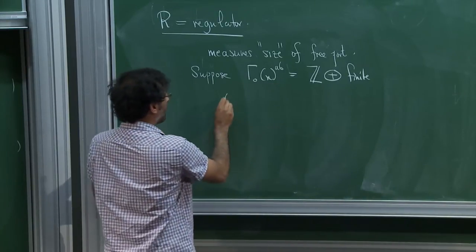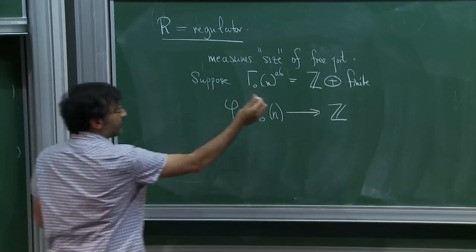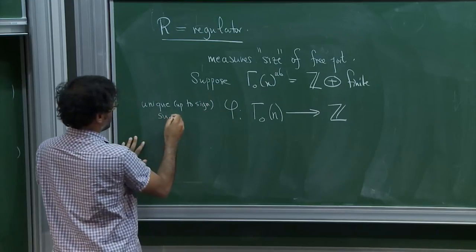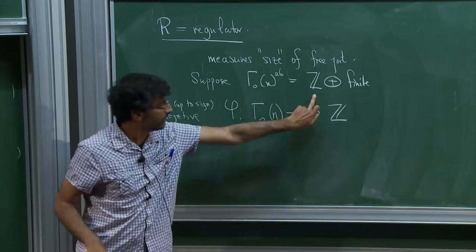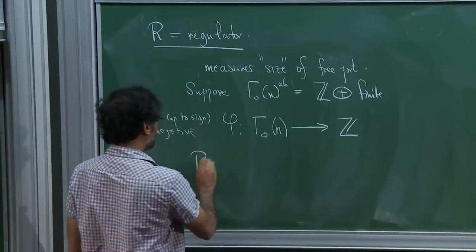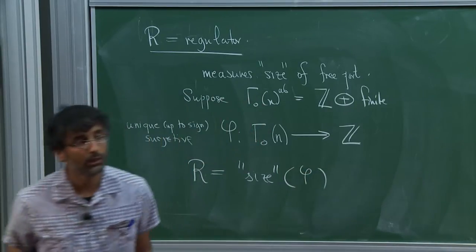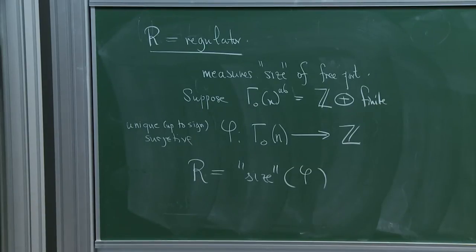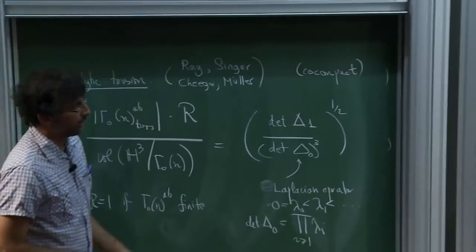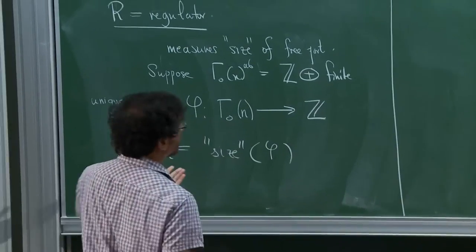Suppose that γ₀(n)^ab is a copy of the integers plus a finite group. There's a unique — up to sign — surjective homomorphism from γ₀(n) to Z. What R is meant to do is measure the size of this homomorphism. I'll describe a couple of different ways you could try to measure this size — it'll turn out all these ways are from the analytic point of view essentially the same.